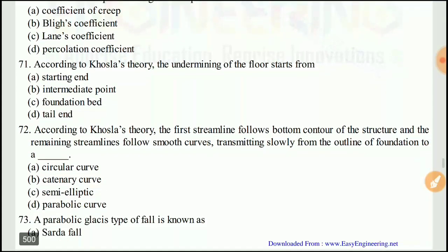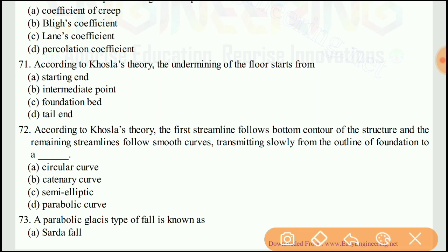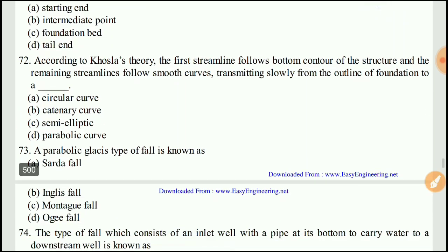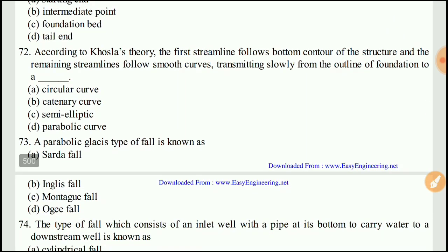Question 71: According to Khosla's theory, the undermining of the floor starts from — the right answer would be D, the tail end.